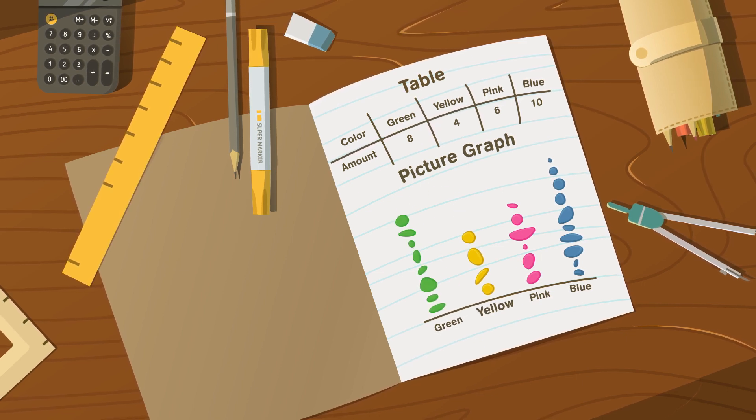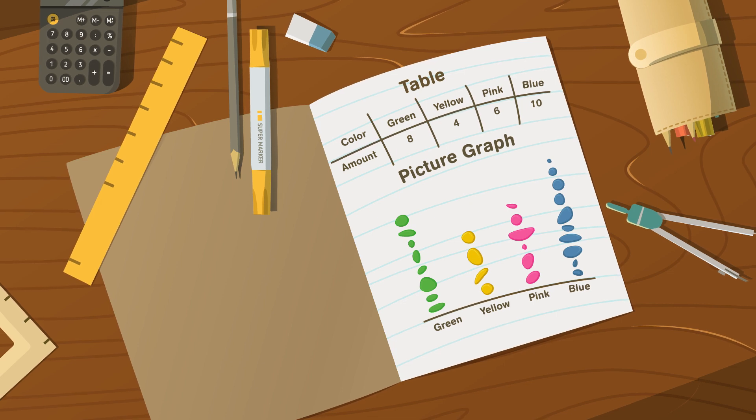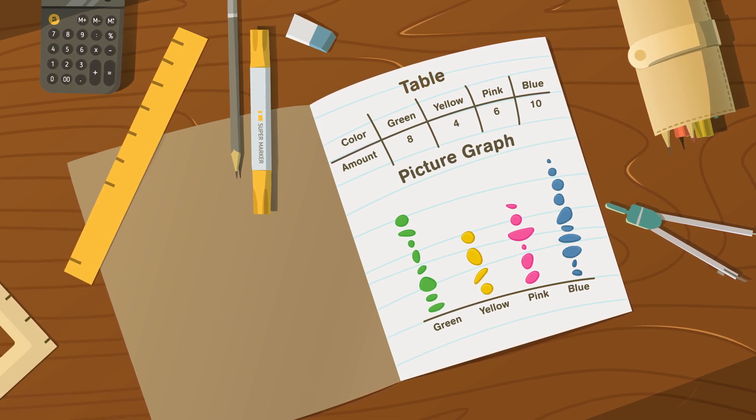On the bottom, the information is divided up by color. Each picture means one piece of sea glass.